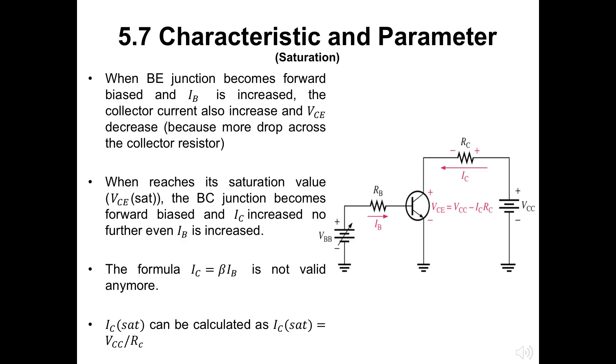On the other hand, from the cutoff, in the figure on our right, when the BE junction becomes forward biased and IB increased, the collector current also increases. VCE later decreases because of the more drop across the collector resistor which is RC. Here we can see that the VCE is equal to VCC minus the RC voltage. When it reaches its saturation value, which here we note as VCE(SAT), the BC junction becomes forward biased and IC increased no further even if IB increased. Therefore, the ratio of beta which we learnt before is not valid anymore when the saturation state occurs.